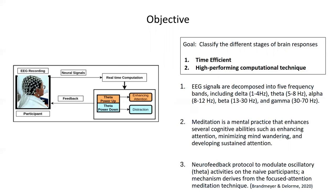EEG signals are mainly decomposed into five frequency bands: delta, theta, alpha, beta, and gamma. One example for real-time analysis is neurofeedback. The protocol defined here is derived from focus-attention meditation techniques.